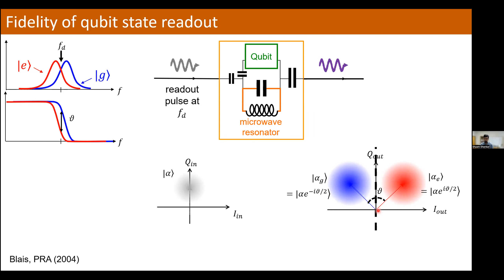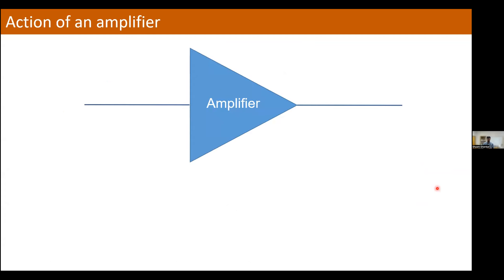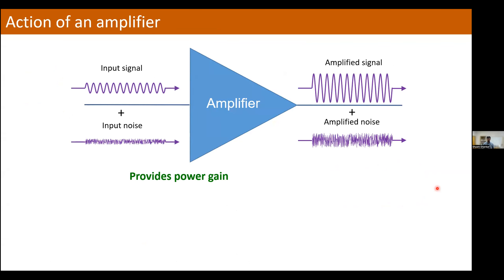The question about the fidelity of this readout basically boils down to how well we can discriminate these two qubit states. One crucial factor controlling the fidelity is the kind of amplifier you're going to use on the output of your circuit QED system to process the information in the readout pulse. Any amplifier is going to add some noise and therefore affect the standard deviation of these distributions; as that becomes larger you have more infidelity. So we really have a premium on using an amplifier that adds the minimum amount of noise. An amplifier takes some input signal and provides an amplified copy on its output, providing power gain.